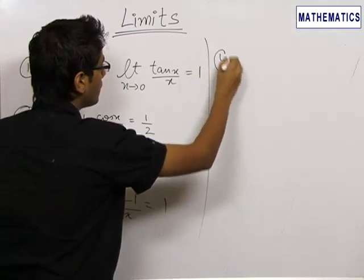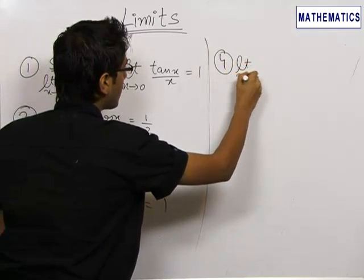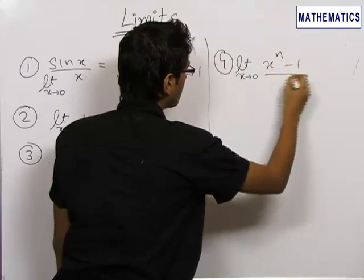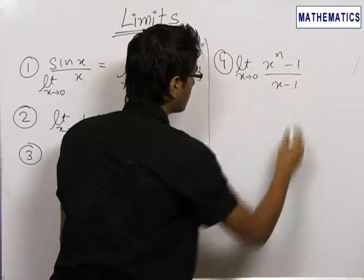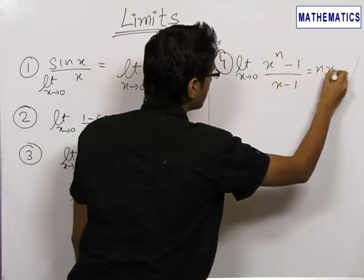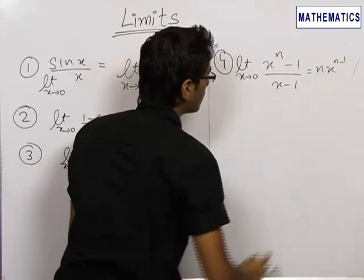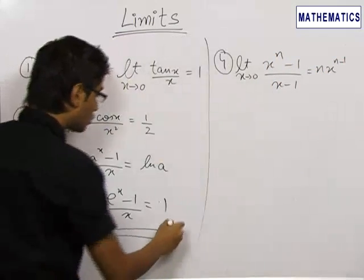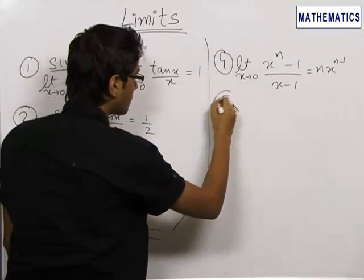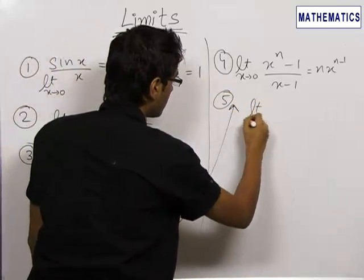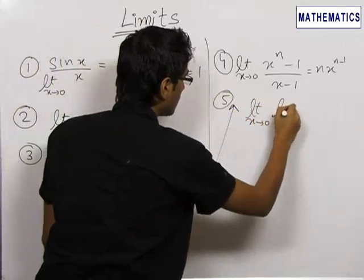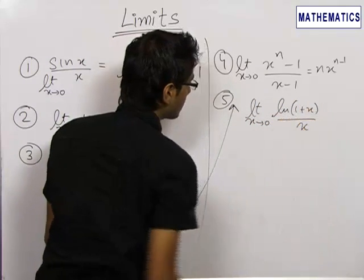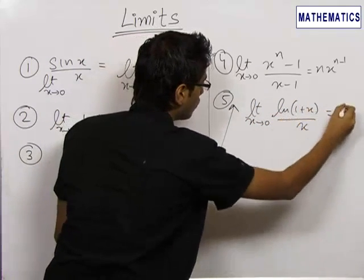The fourth important limit is limit x tending to 0 of x^n minus 1 upon x minus 1, which is equal to n times x^(n-1). This limit can also be converted into limit x tending to 0 of ln(1 + x) upon x, which is equal to 1.